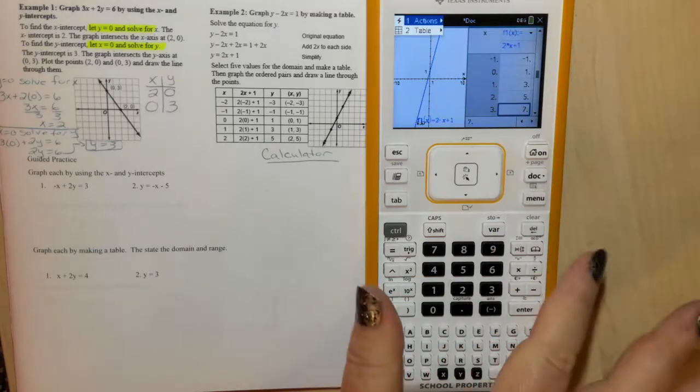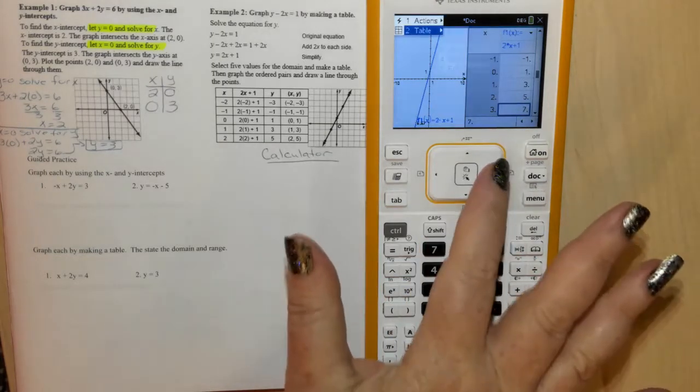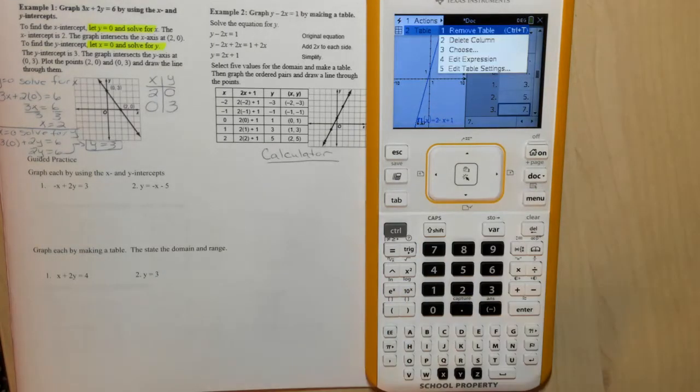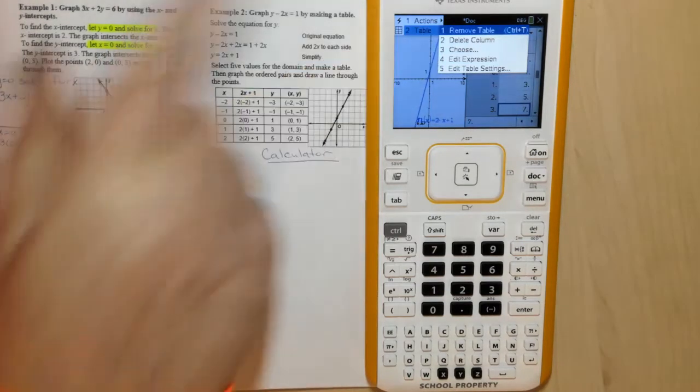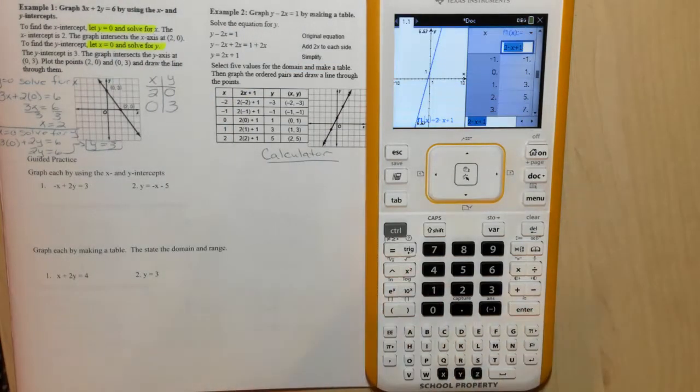Go back to menu. Table. Hmm. I want to edit my expression. Number 4. There we go. We can type in our new expression.